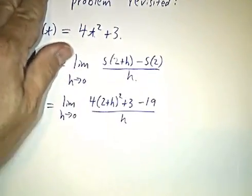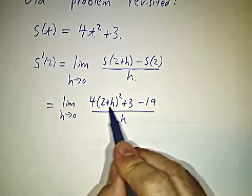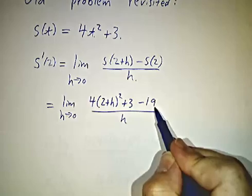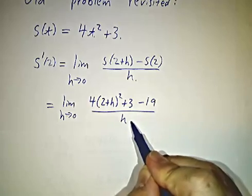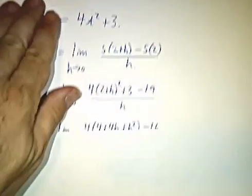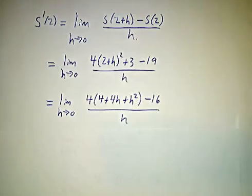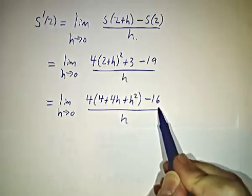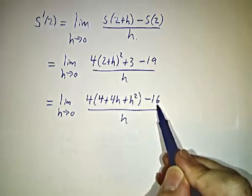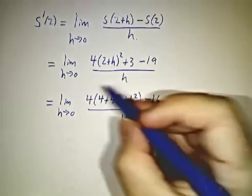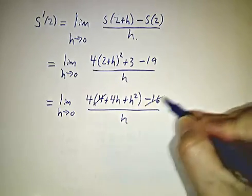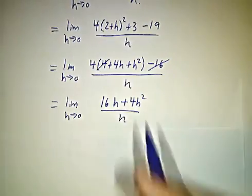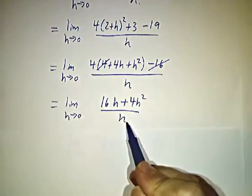And then we just say, oh, s of 2 plus h is 4 times 2 plus h squared plus 3. And s of 2 is 19 divided by h. And then we expand it out. 2 plus h squared is 4 plus 4h plus h squared. Then plus 3 minus 19 is minus 16. And 4 times 4 equals 16, so those cancel. And we're left with 16h plus 4h squared over h.